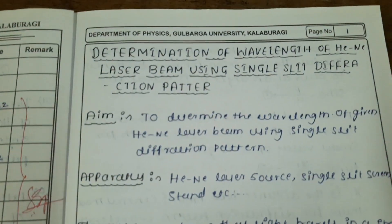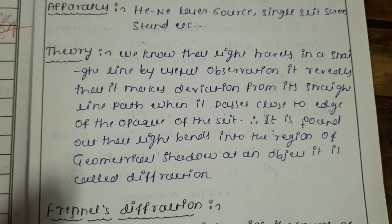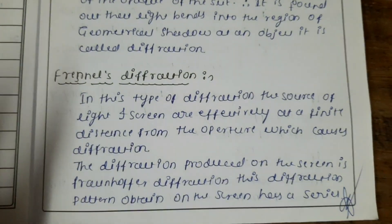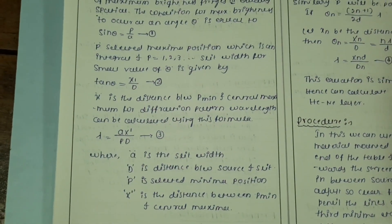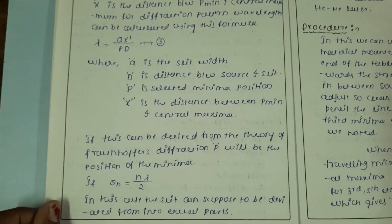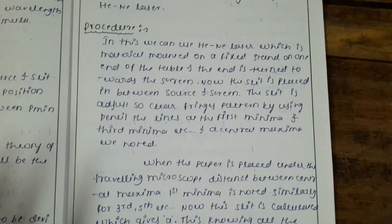The theory of the diffraction of light should be understood using Fraunhofer diffraction. Some of the formulas you should know to calculate the wavelength — I will explain how to do it.